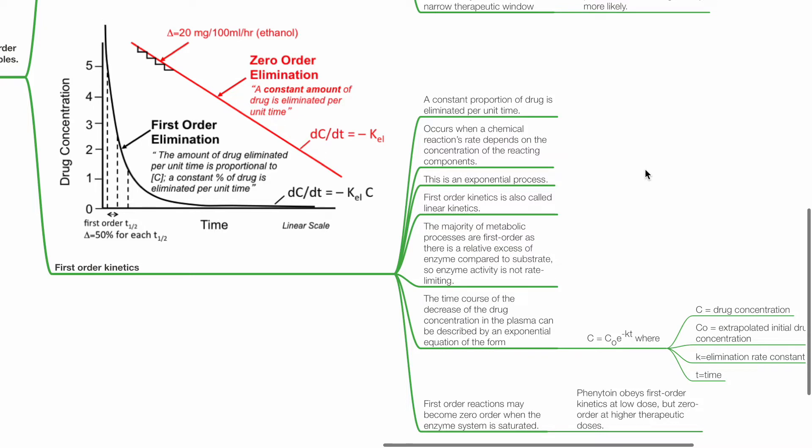First-order kinetics is also known as linear kinetics. The majority of metabolic processes are first-order, as there is a relative excess of enzyme compared to substrate, so enzyme activity is not rate-limiting.